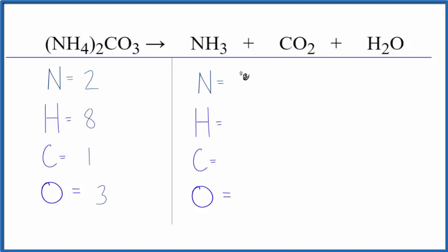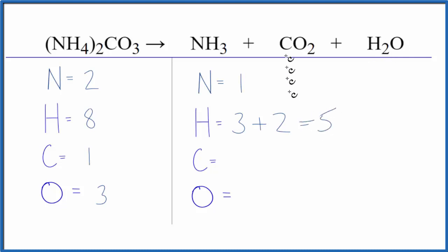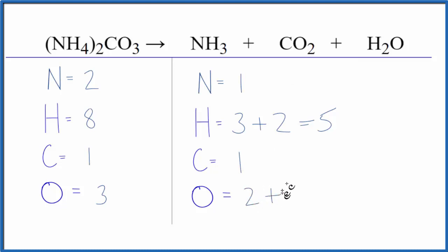On the product side, we have one nitrogen and three hydrogen atoms, plus we have to make sure we count these two here. So we have five hydrogen atoms, one carbon, two oxygen atoms, plus the one oxygen here in the water, so we have three.